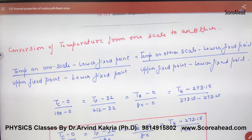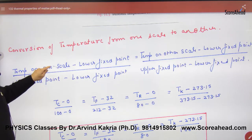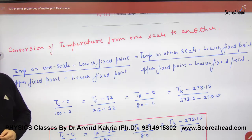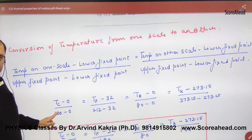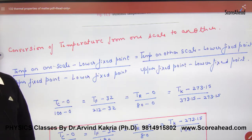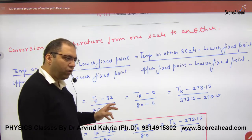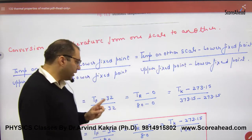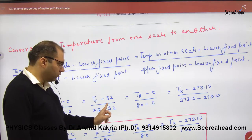For example, if temperature is in Celsius (Tc), the lower fixed point is 0 (ice point) and upper fixed point is 100 (steam point). If converting to Fahrenheit, the lower fixed point is 32 and upper fixed point is 212. For Kelvin, the lower fixed point is 273 and upper is 373.